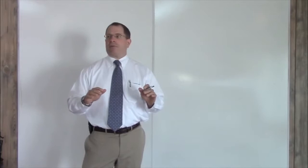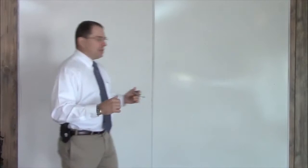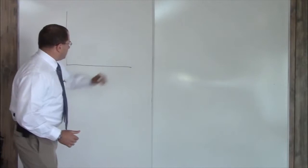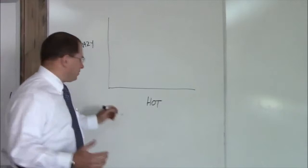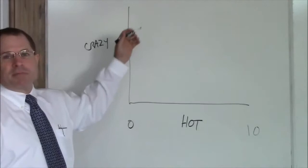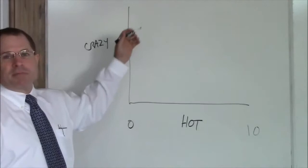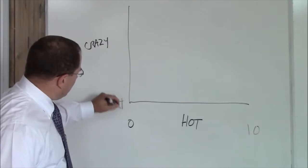So this is the Universal Hot Crazy Matrix. It's everything a young man needs to know about women. I've developed this on my own over 46 years of living on the earth. So this is how it works. You have your crazy axis and your hot axis. Hot is as usual measured from 0 to 10. We're all familiar with that. Crazy is measured from 4 to 10 because of course there's no such thing as a woman who's not at least 4 crazy.